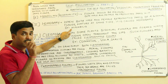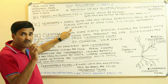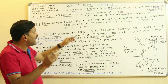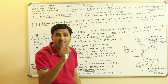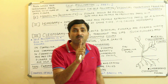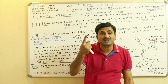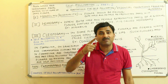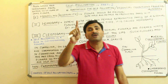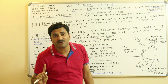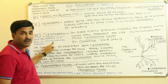Homogamy can be seen in Mirabilis. If the male and female reproductive parts in a bisexual flower have different maturity periods, then it is not called homogamy — it will be called dichogamy, and in dichogamy, instead of self-pollination, cross-pollination will occur.